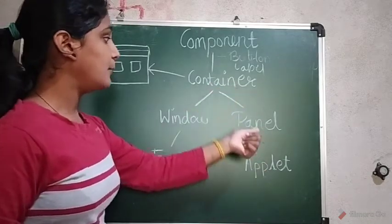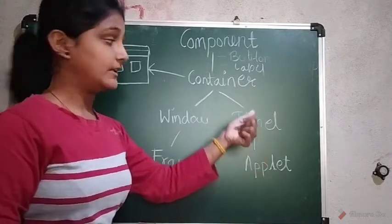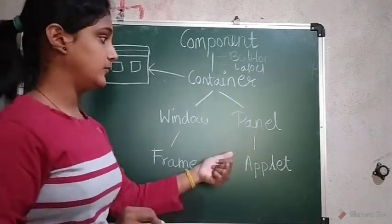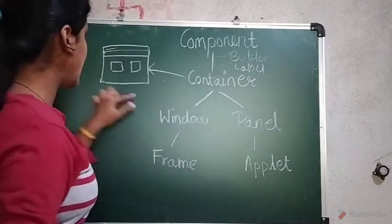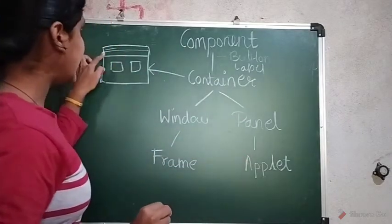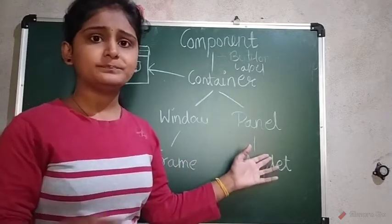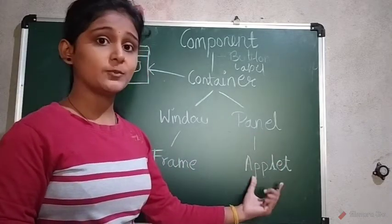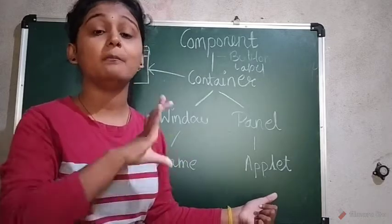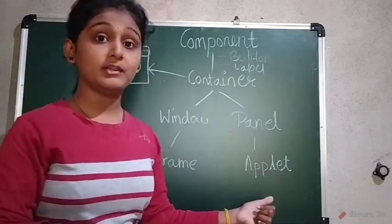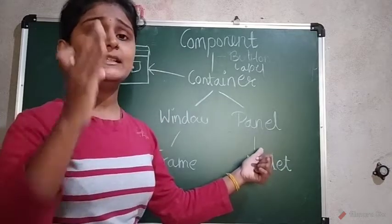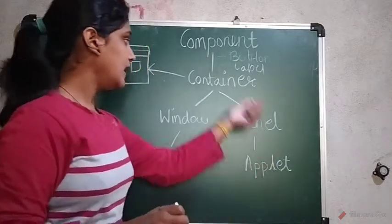Panel is itself a container, meaning it is a subclass of Container. Just listen carefully: Panel does not contain a border, title bar, or menu bar. Whenever you run an applet program on the browser, you don't see the title bar or menu bar. But when you run it on the applet viewer, there you see the border and the title bar. So Panel is the class which does not contain the title bar, menu bar, or borders.